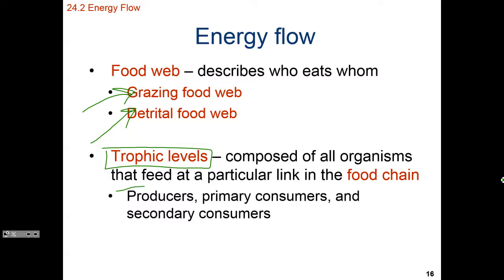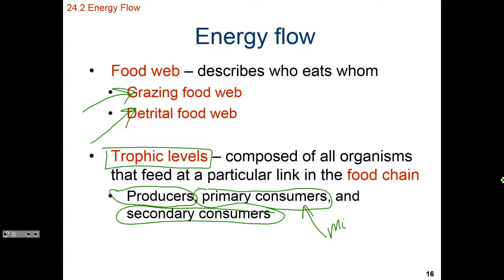At the bottom of our trophic levels, we have producers — think of plants. Then we have primary consumers, which are herbivores. Secondary consumers are our low-level predators. A primary consumer would be something like a mouse. A secondary consumer could be a snake that eats the mouse, and then we can even have a tertiary consumer — that would be the eagle that eats the snake. Depending on how complicated your food web is, you can even have a quaternary or fourth level added onto it.